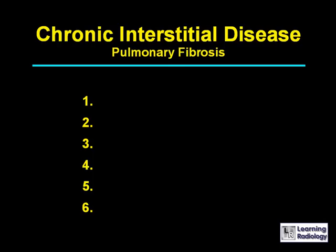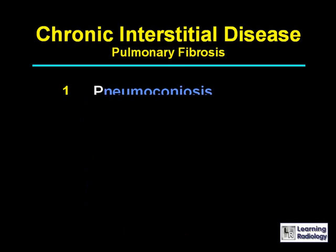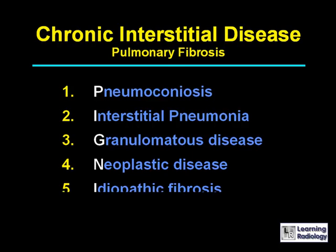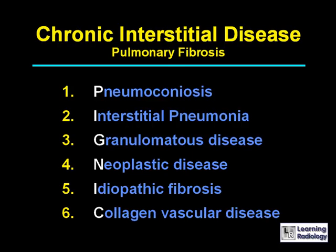This is the next differential: chronic interstitial disease or pulmonary fibrosis. Six causes are given: pneumoconiosis, interstitial pneumonias, granulomatous disease, neoplastic disease, idiopathic fibrosis, and collagen vascular disease.